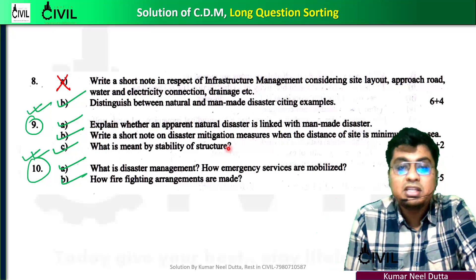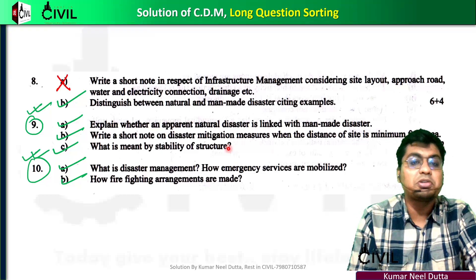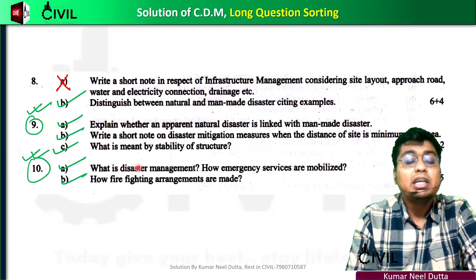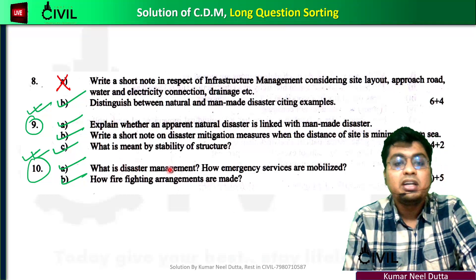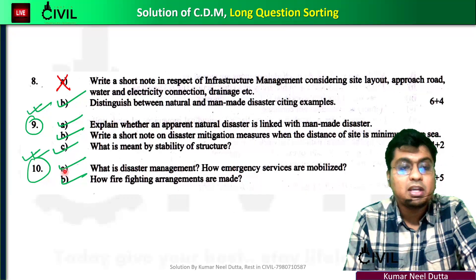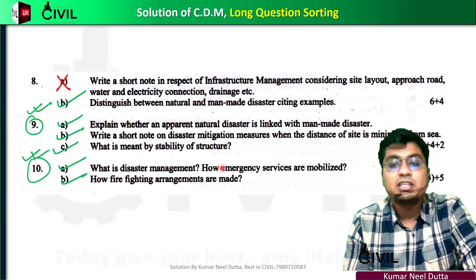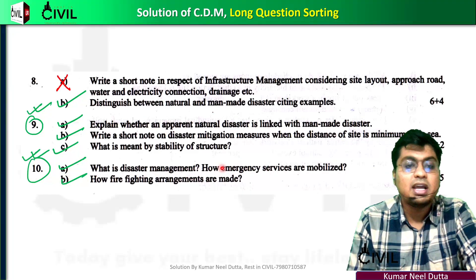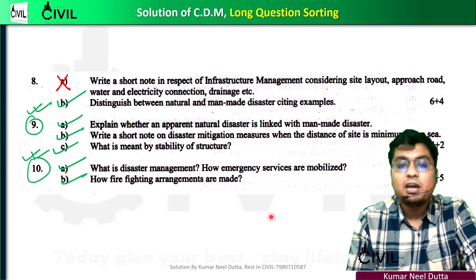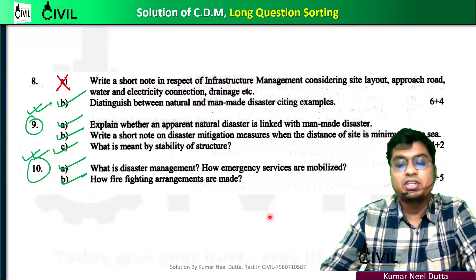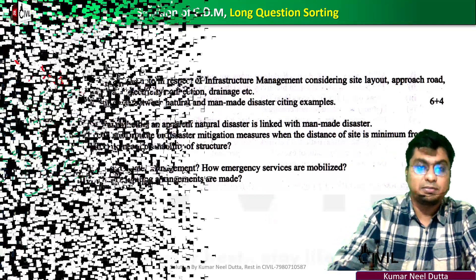Mitigation means stability of structure — we can establish our structure as stable. Unit 9 disaster management: how emergency services are mobilized, firefighting arrangements are made. This is the question.